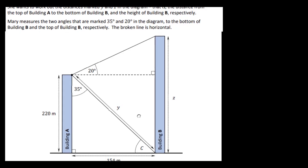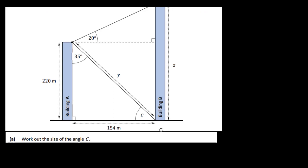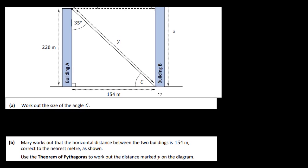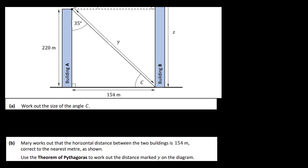The broken line is horizontal. We need to work out Y and Z, but first let's find angle C. We have a triangle with two known angles, so the size of angle C is 180° minus 90° minus 35°, which equals 55°. So C is equal to 55 degrees.